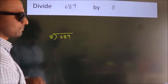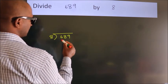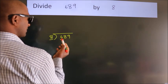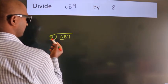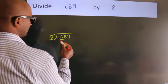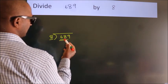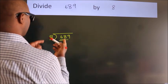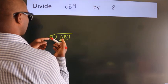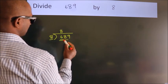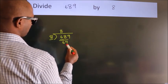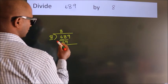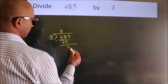Next, here we have 6 and here 8. 6 is smaller than 8, so we should take two numbers: 68. A number close to 68 in the 8 times table is 8 × 8 = 64. Now we subtract, and we get 4.